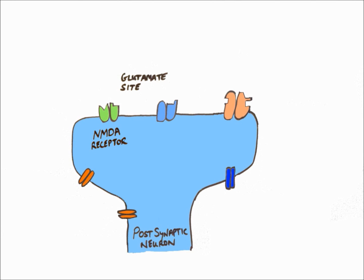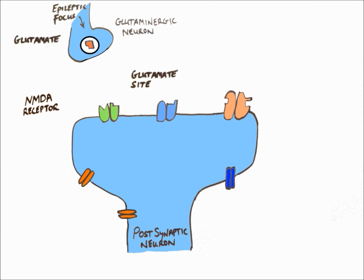Here we have a representation of a post-synaptic neuron with NMDA, AMPA, and GABA receptors, as well as sodium and T-type calcium channels. An epileptic focus generates an action potential which travels to pre-synaptic glutaminergic neurons, causing vesicles containing glutamate to move towards and fuse with the pre-synaptic membrane. Glutamate is an excitatory neurotransmitter which will cause action potentials from the epileptic focus to advance.